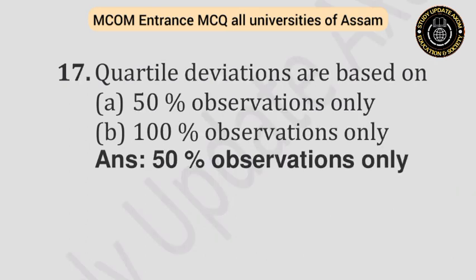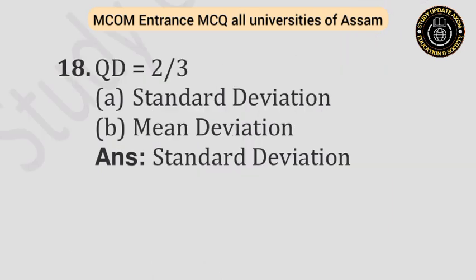Question number seventeen: Quartile deviations are based on — Option A: 50% observations only. Option B: 100% observations only. Answer is 50% observations only. Question number eighteen: QD equals two-thirds of — Option A: Standard deviation. Option B: Mean deviation. Answer is standard deviation.